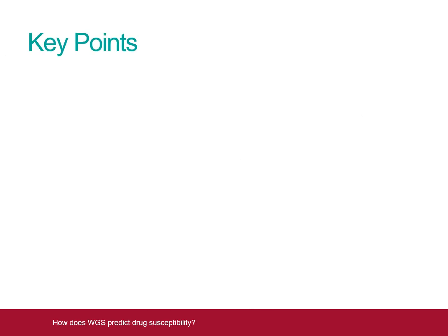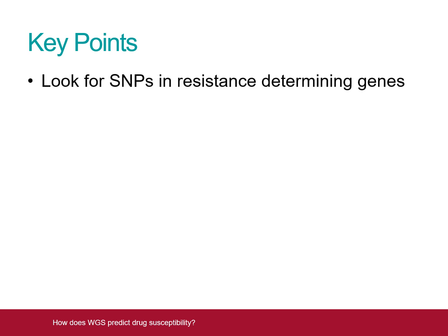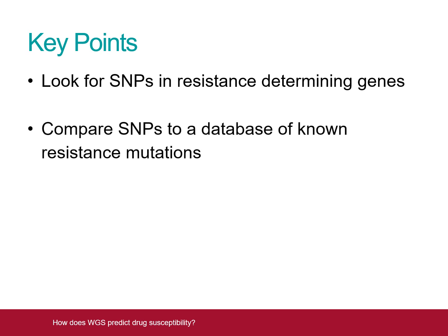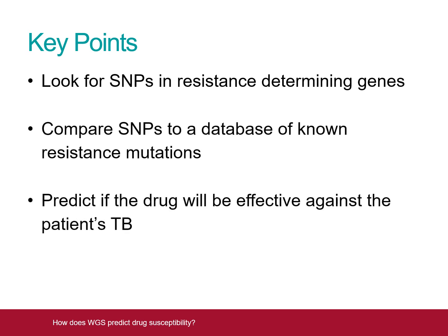In summary, we start by identifying any SNPs in resistance-determining genes. We then compare these SNPs to known resistance mutations. And we use these results to predict if the drug will be effective or not. Interpretation of these results is covered in another video.